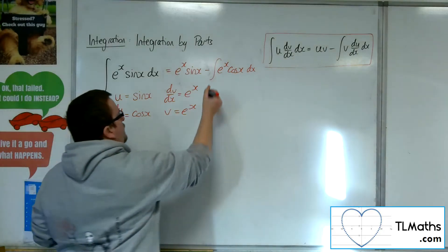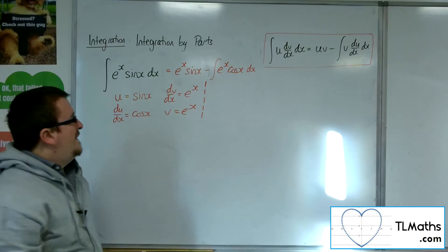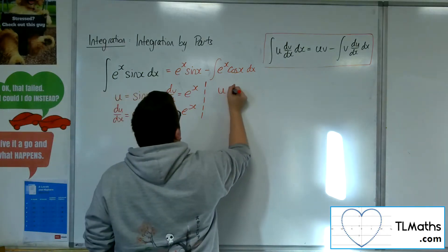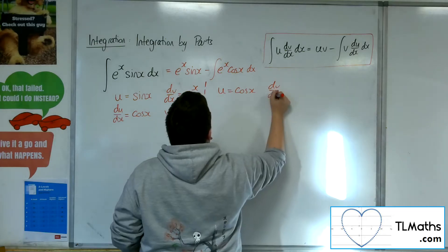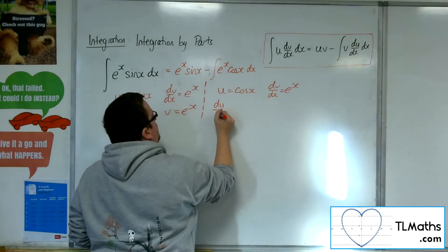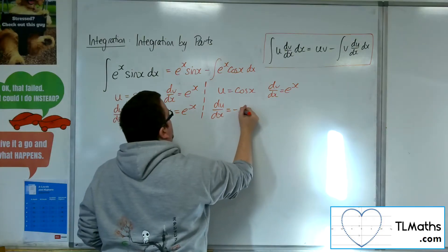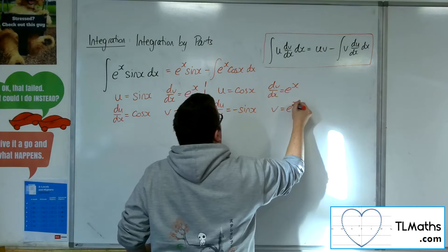OK, so I would have to use integration by parts again on the e to the x cosine x. So the u would be cosine of x, the dv by dx would be e to the x. So du by dx would be minus sine x, differentiating, and v would be e to the x.